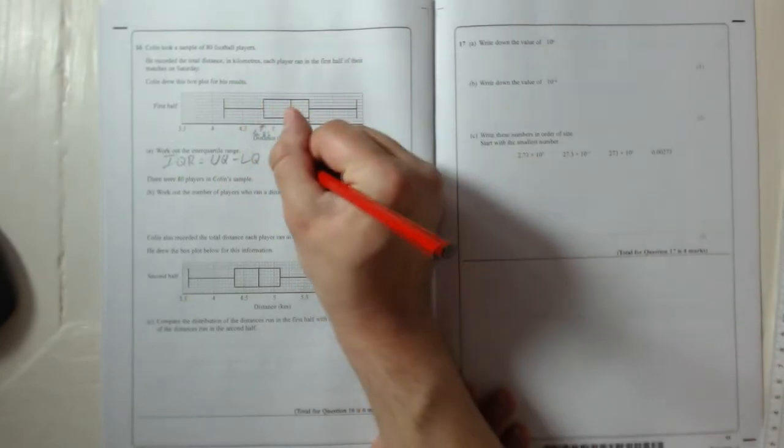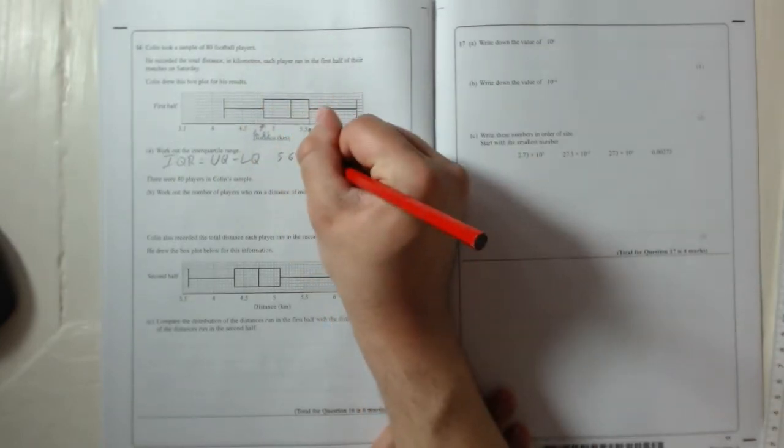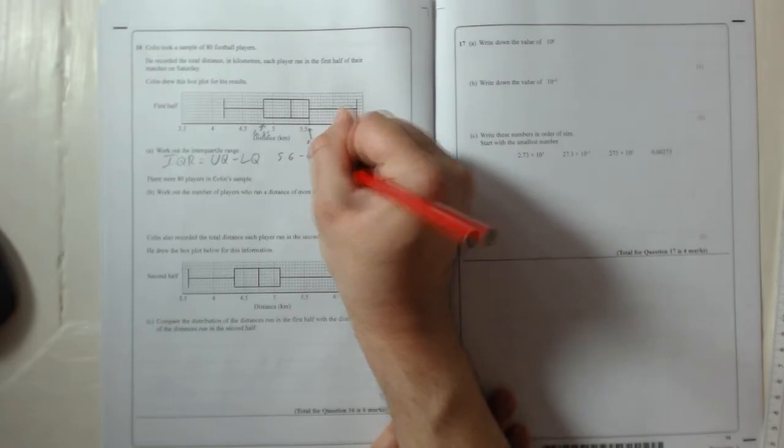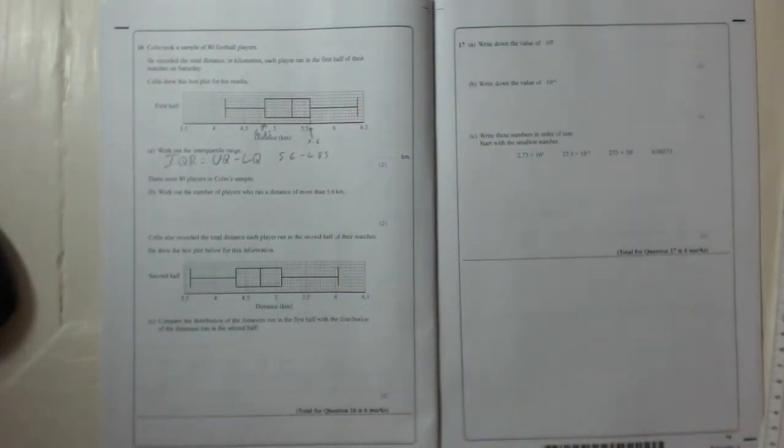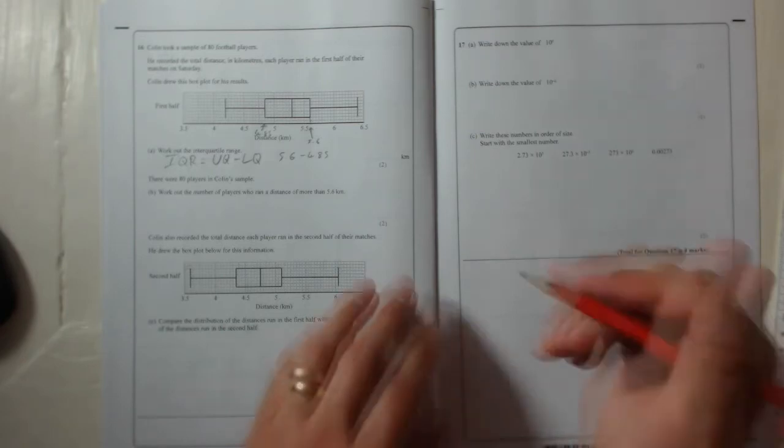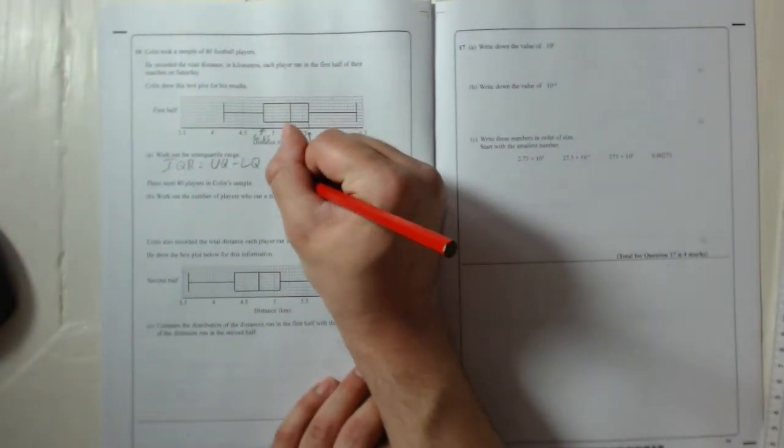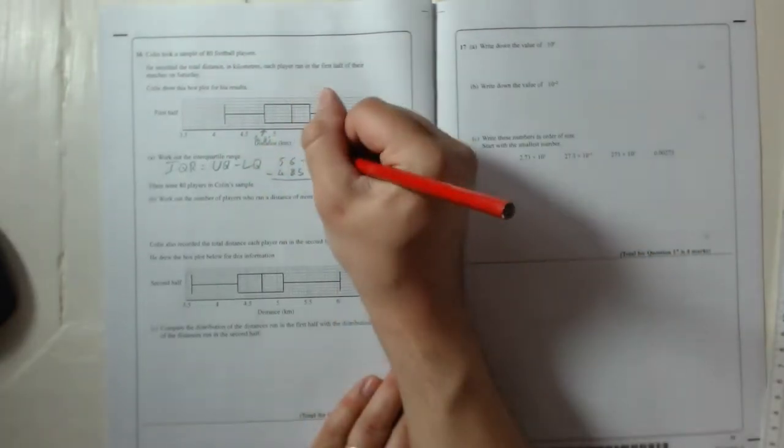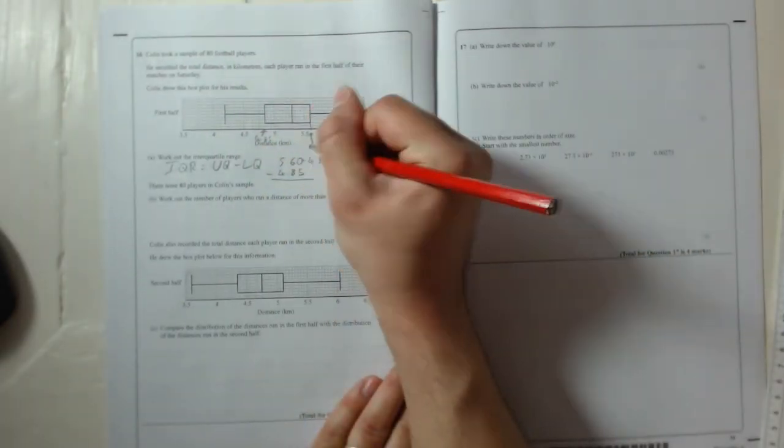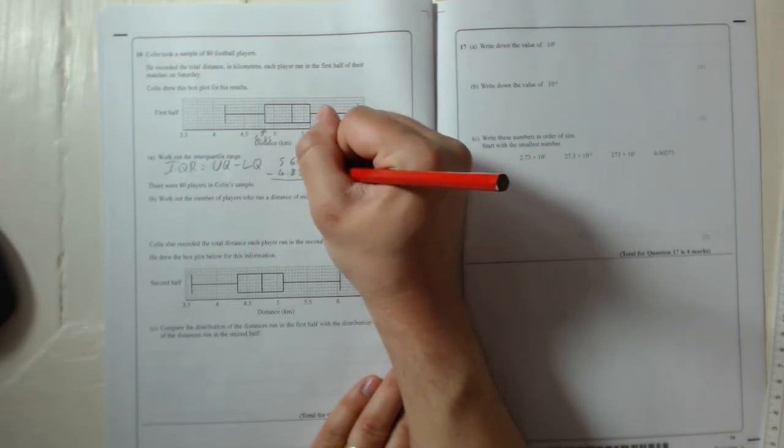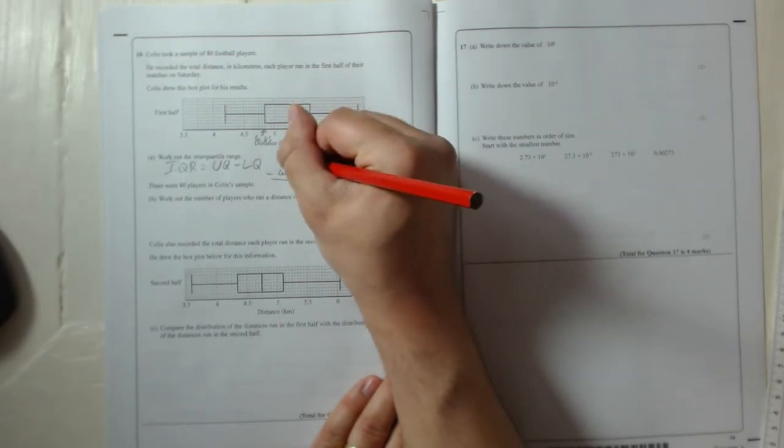So 5.6 take away 4.85. Now just to be safe, it's probably best to use column method to do this question. So 5.6, 4.85, subtract. Put a 0 in to do that. 0 take away 5 you can't do, so I'm going to borrow from the 6.